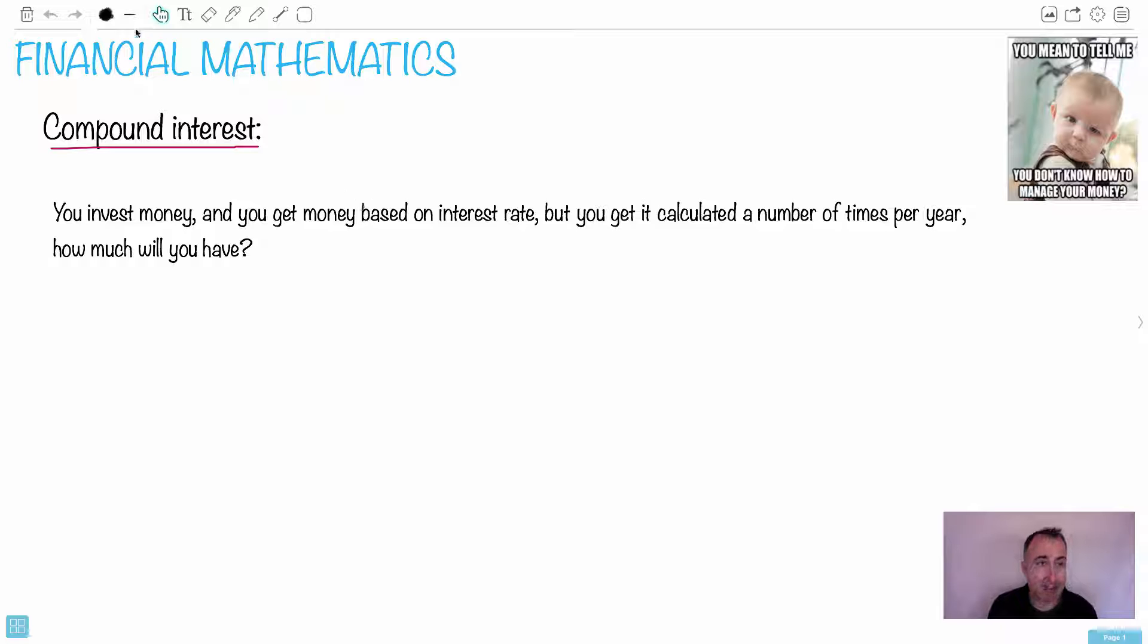The reason I wanted to define it like this is just so I can start defining some important variables, some words we're going to be using. If you invest money, that amount you initially invest we're going to call that the present value. That's the initial amount you actually put in. It's based on an interest rate, so that's going to be called the nominal interest rate. That's going to be the annual interest rate as a percent. It's going to get calculated a number of times per year. We're going to call that the compounding periods per year.